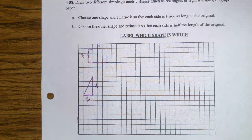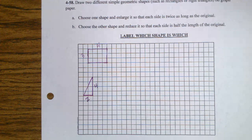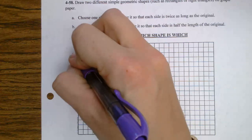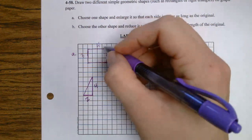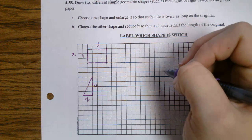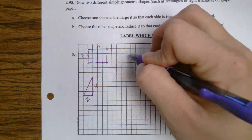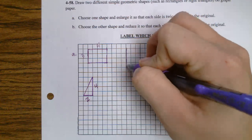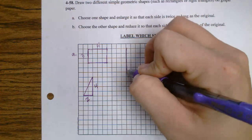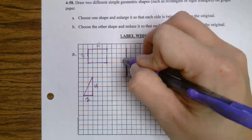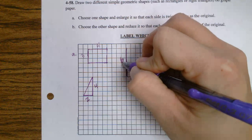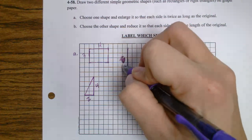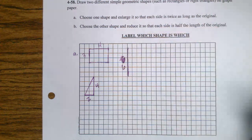So part A, choose one shape and enlarge it so that each side is twice as long as the original. I'm going to just pick my rectangle to be part A. So each side has to be twice as long. So 2 of 3 is 6. So it's going to go 6 long, 6 down.